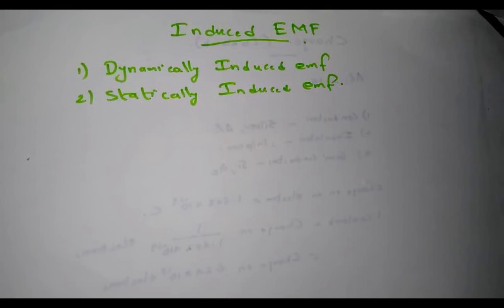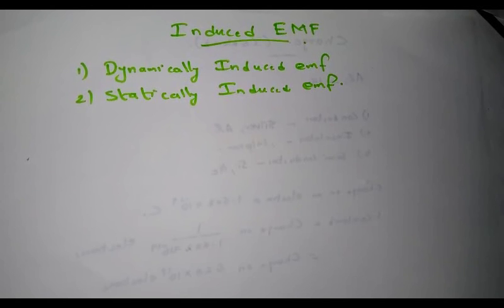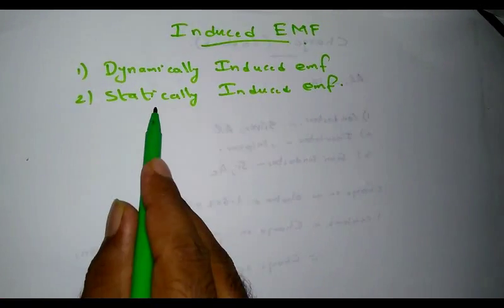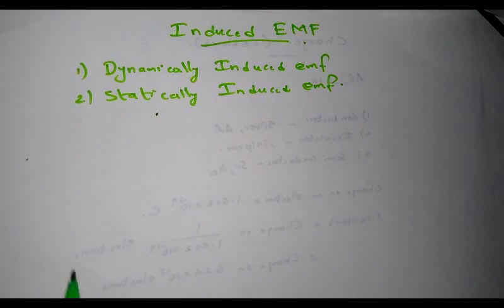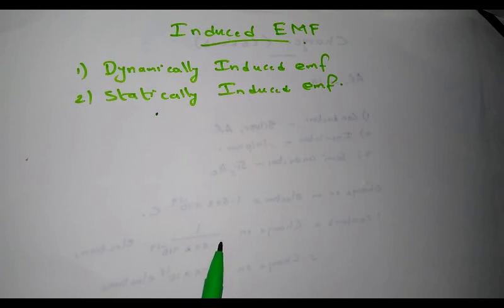Dynamically induced EMF is one in which the conductor is moved in a stationary magnetic field in such a way that the flux linking with it changes, and then an EMF is induced. Statically induced EMF is one in which the magnetic field is changing or varying while the conductor is stationary, and in such a way the flux linking with it changes — that EMF is known as statically induced EMF.